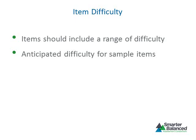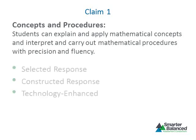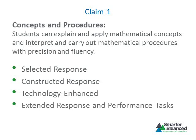Let's examine the claims and assessment targets contained in the Smarter Balanced Assessment Consortium Mathematics Content Specifications. For mathematics, there are four claims. Claim 1 focuses on concepts and procedures, requiring students to explain and apply mathematical concepts and interpret and carry out mathematical procedures with precision and fluency. The focus is on content knowledge learned at the grade level being assessed. Item types include Selected Response, Constructed Response, and Technology-enhanced items. Content for this claim may also be evaluated with extended response items and performance tasks, which have a direct connection to the content domains and clusters of the Common Core State Standards for Mathematics.